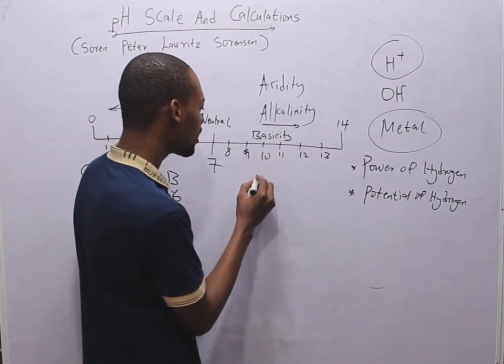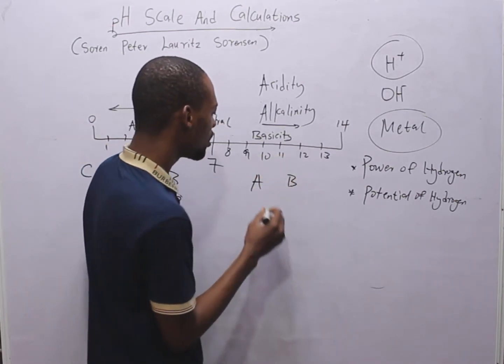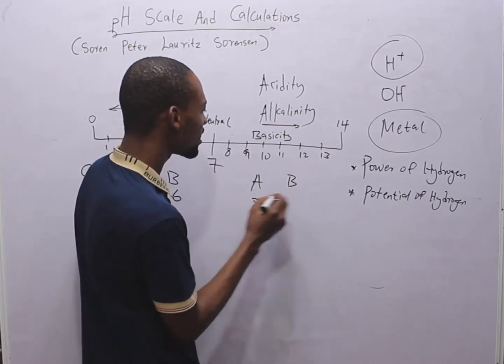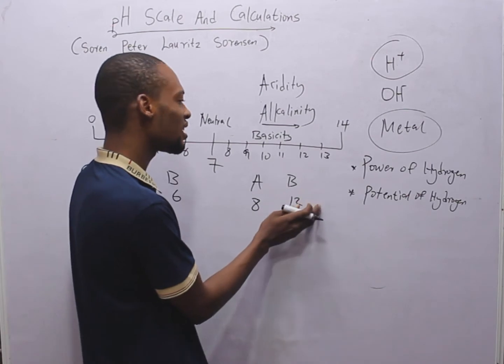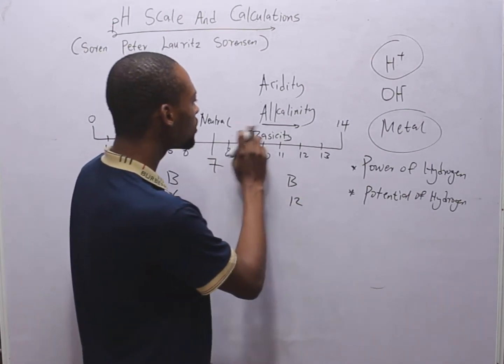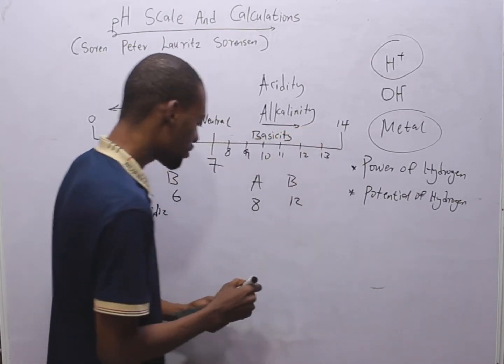Meanwhile, this way, if you have A and B. If A is 8 and B is 12, solution B is more basic than solution A because basicity increases this way.